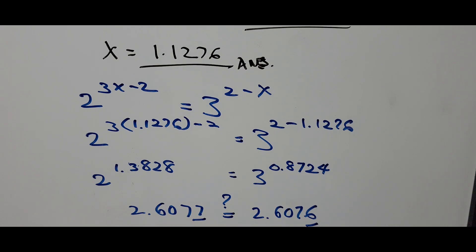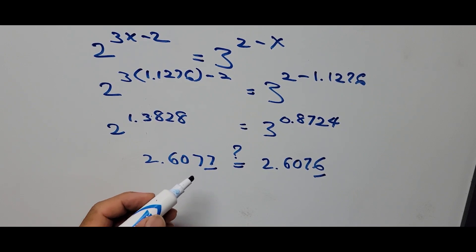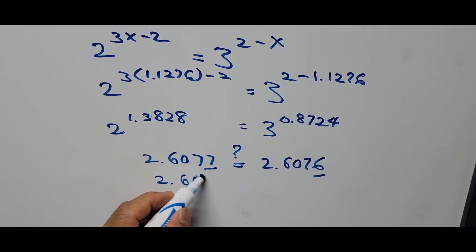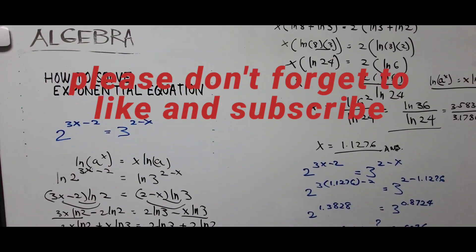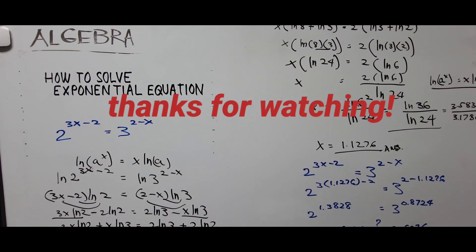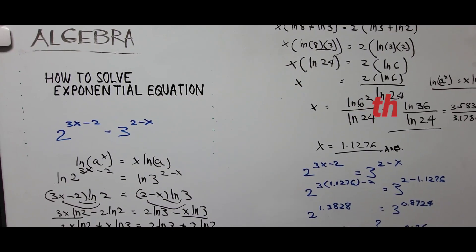That's the difference right there, 0.0001. So if we round this off, it will be 2.607 equals 2.607. That means our answer is correct. So x is equal to 1.1276. That's all for today. Don't forget to like and subscribe. See you in the next videos. I appreciate your time, guys. Have a good one, have a great day. Bye.